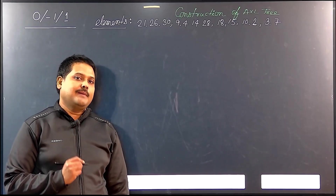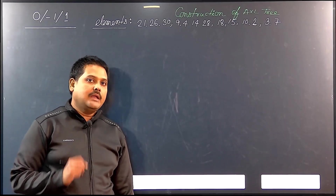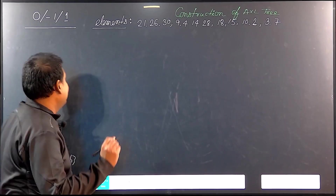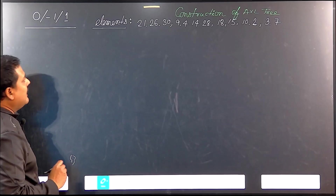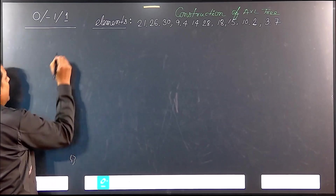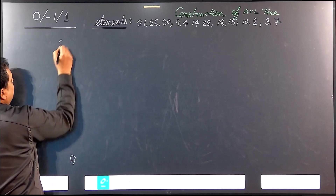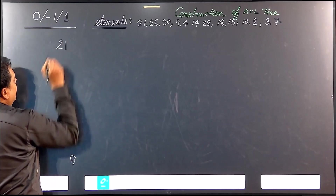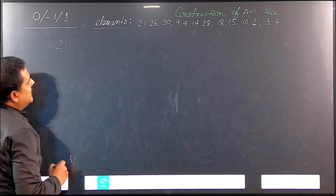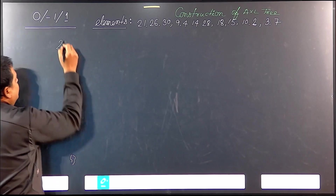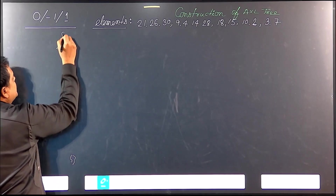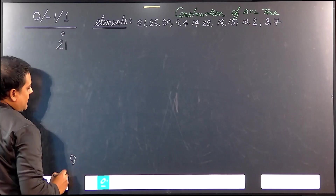We are going to solve another problem on AVL tree. Let us have a look. The first element is 21, so 21 will be inserted here. What is the balance factor of 21? This is 0. No problem.